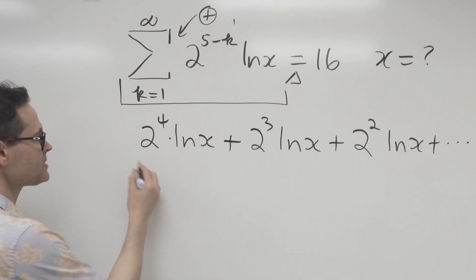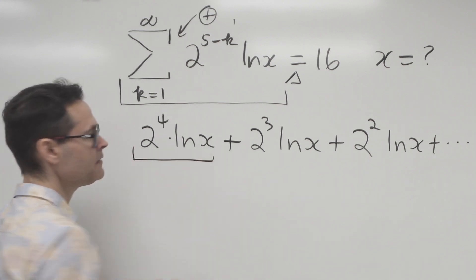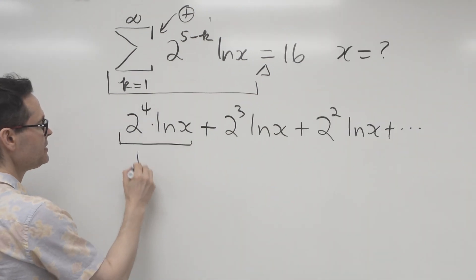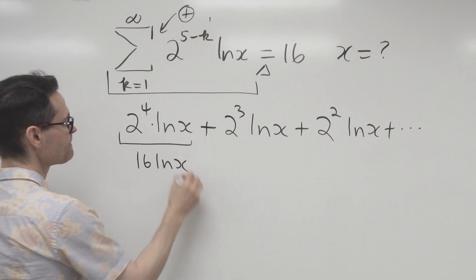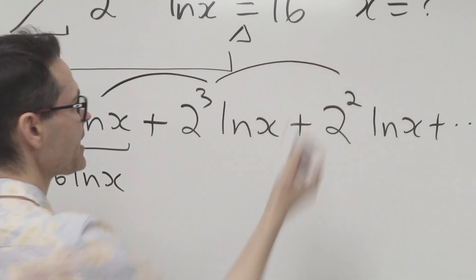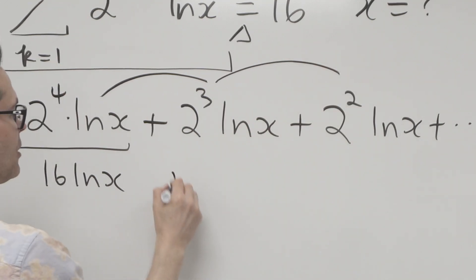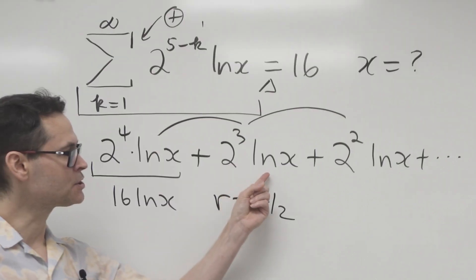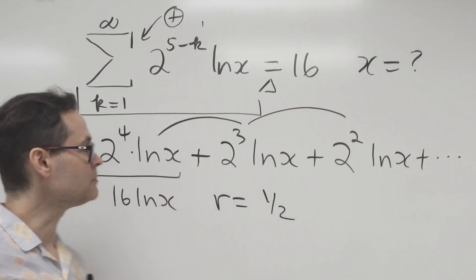What I notice is that my first term in this infinite series is 16 ln x, and I also notice that as I go from one term to the next, this appears geometric, where the common ratio is 1 over 2. So the common ratio is just the ratio of any two consecutive terms.